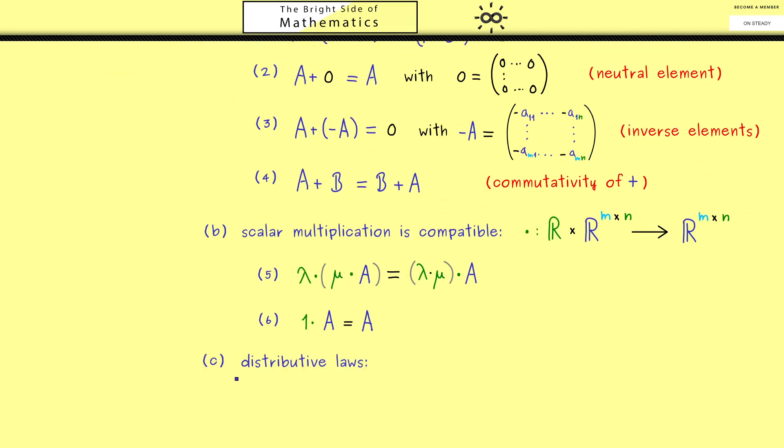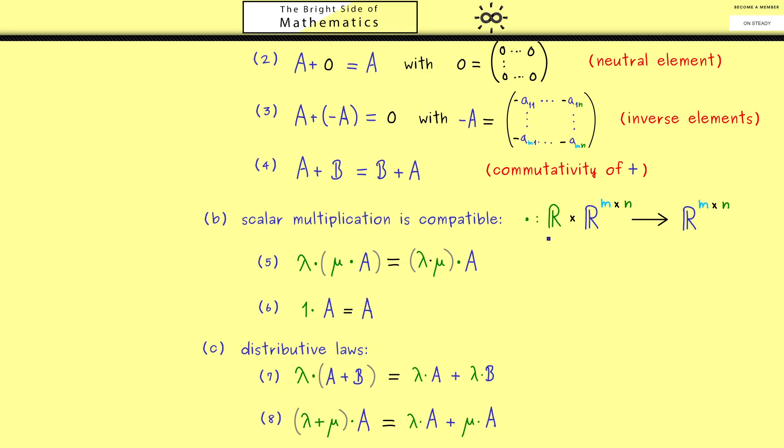Okay, then last but not least we have distributive laws to combine both operations. They are also easy to prove when you know how to calculate with real numbers. Simply because we do this normal calculation in each entry. And then you just have to combine all these calculations to get these rules here.